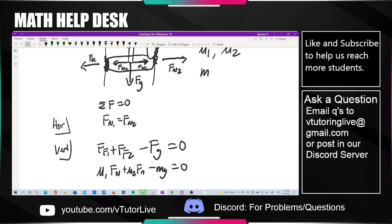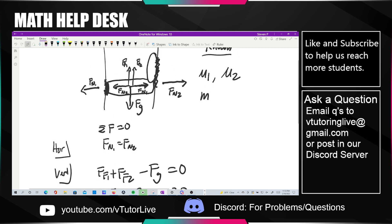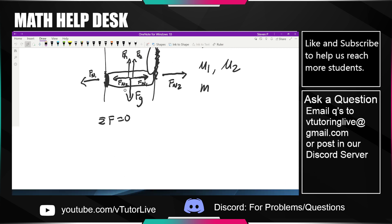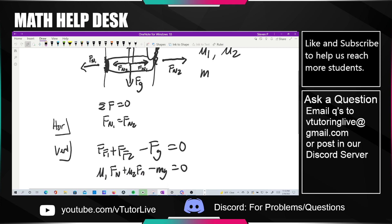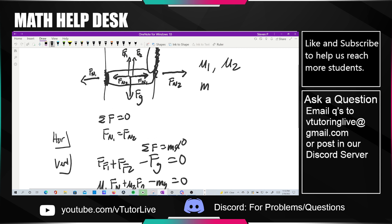The vertical direction is saying that all of their forces are also canceling out because they're not moving up or down. Their acceleration is zero, so again the sum of the forces is equal to mass times acceleration, acceleration is zero. That means the force of friction one plus force of friction two minus force of gravity has got to all be equal to zero.